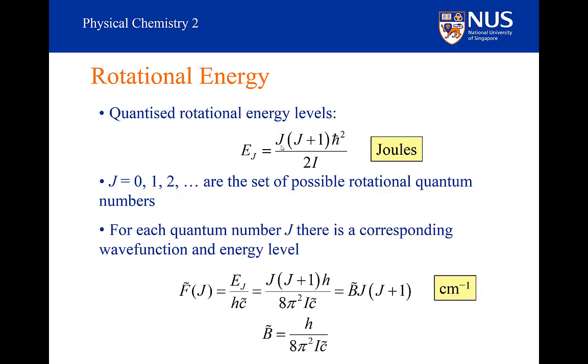The important thing to note with this solution is that for every quantum number J there is a corresponding wave function and energy level. This is the same as we had for the particle in the box, where for every value of n there was a corresponding wave function and energy level.